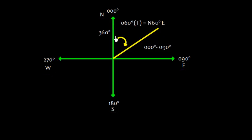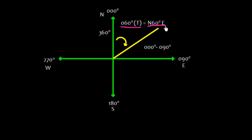Suppose the course is between 000° and 090° — that means it's in the northeast quadrant. For example, if the course is 060° true, this angle is 60 degrees. So we can write it in quadrantal format as N60°E. That is how we convert the three-figure notation into the quadrantal system.